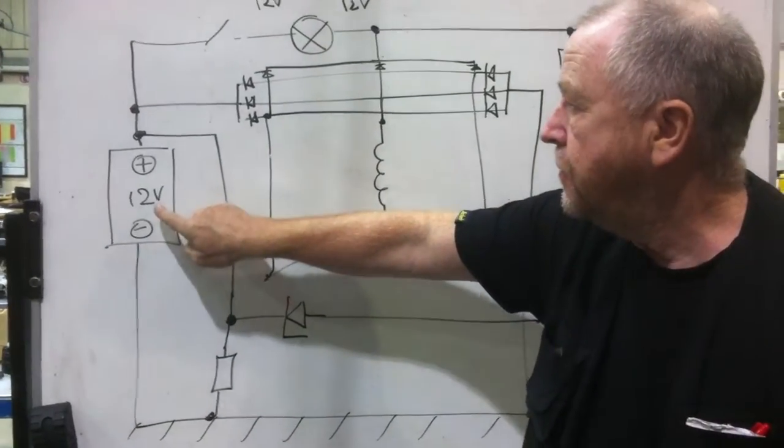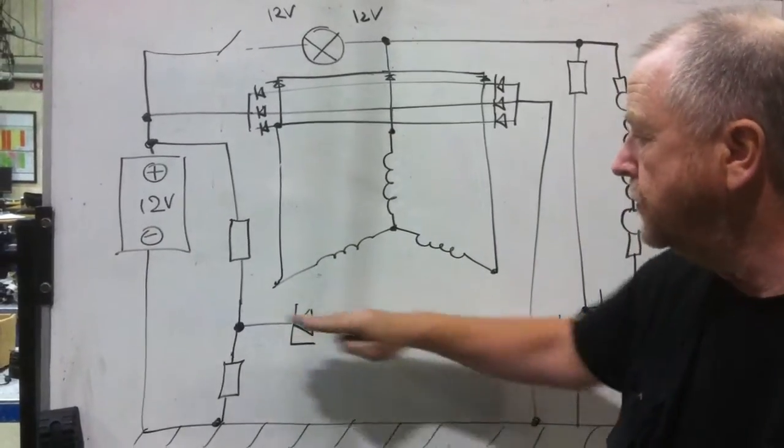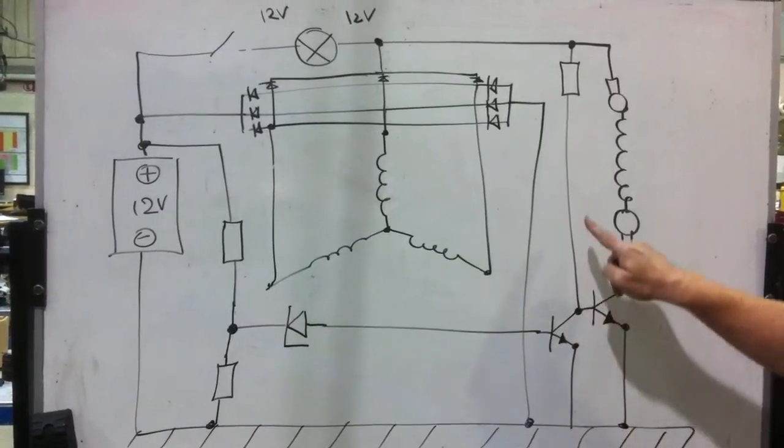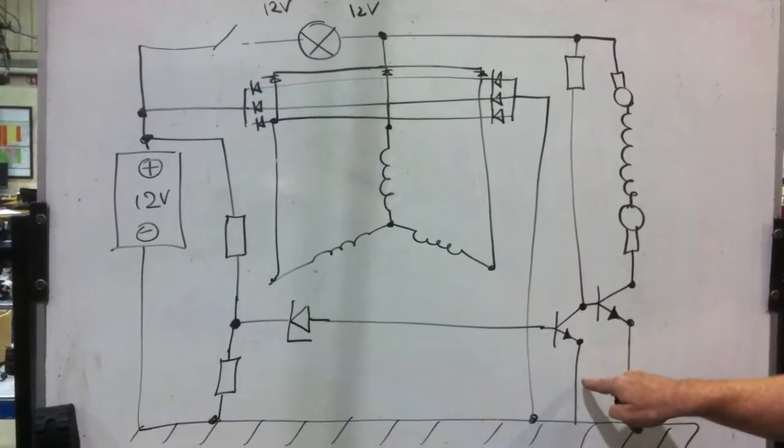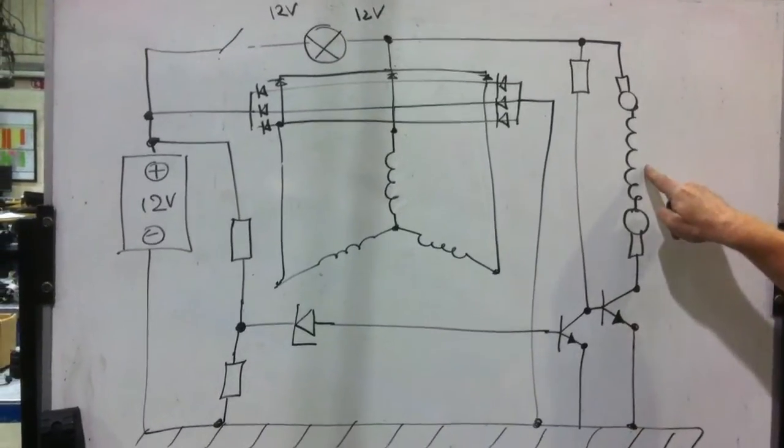When the battery voltage rises, the Zener gets knocked down. He conducts freely in both directions. He switches on this transistor. This transistor is switched on. He robs this current here and passes it to the ground. Which means this transistor is switched off. Which means the rotor is switched off. Which means he makes no electricity.